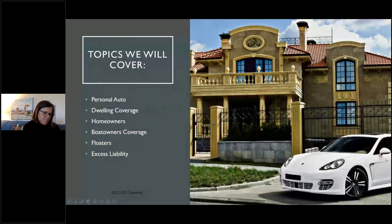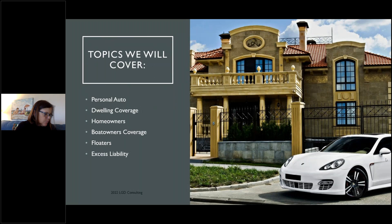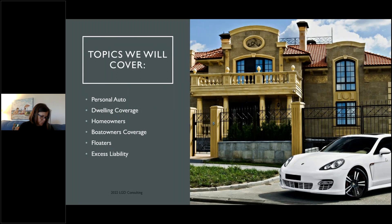The topics we're going to cover today: personal auto, dwelling — for the exam, when you hear dwelling coverage, think of you're a landlord; you own a house and rent it out, versus a homeowner's policy where you own it and live in it. We'll discuss covering a boat, floaters — like a jewelry floater covering high-ticket items beyond what your homeowner's policy affords — and liability coverage. California is a sue-happy state with more attorneys per capita than any other state, so you want lawsuit protection.